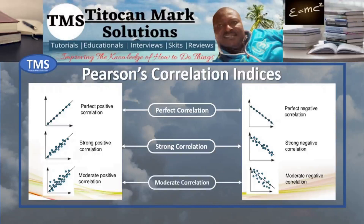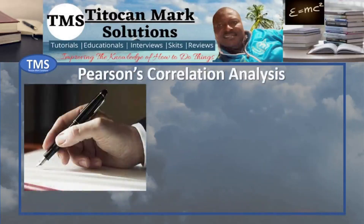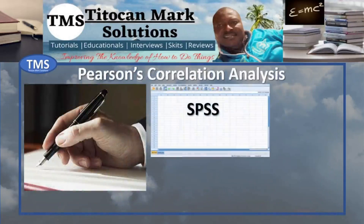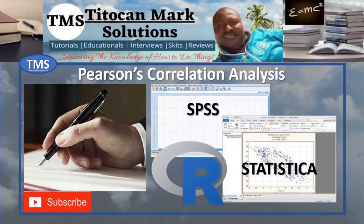Correlation analysis can be calculated by hand or by use of statistical software such as SPSS, Statistica, or the R package, among others. It is significantly important that you have a comprehensive knowledge of how to perform statistical analysis by hand, so that you have a full understanding of what goes on behind the software application.